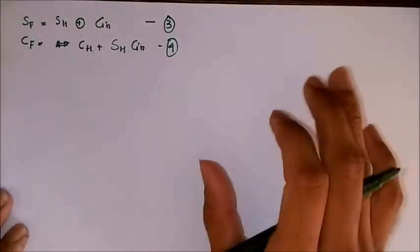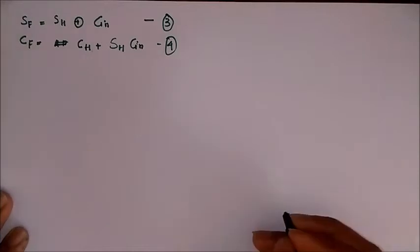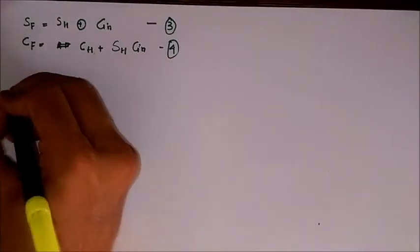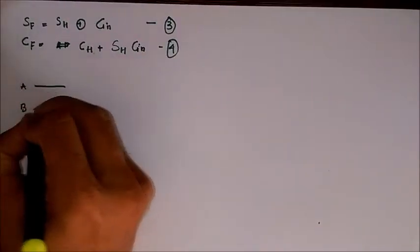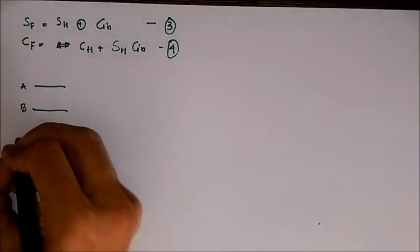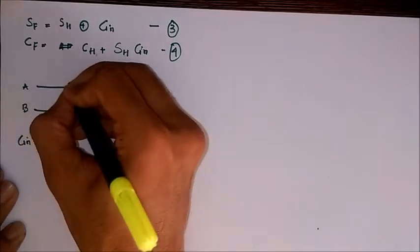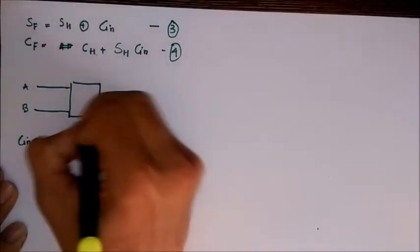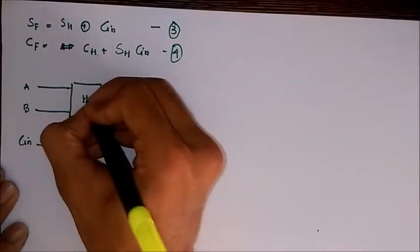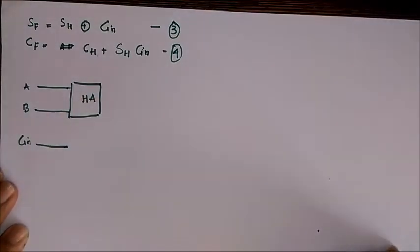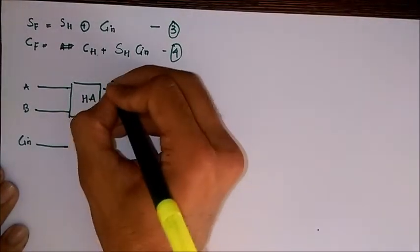So these are the two equations that we found out. Now for drawing the circuit there will be two inputs, A and B, and the third input C, Cin. So first we give the A and B input to the half adder circuit.